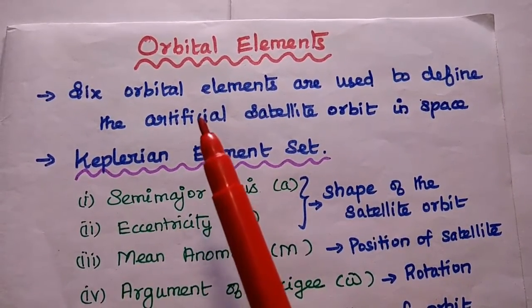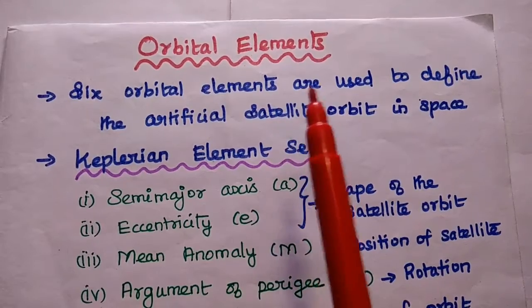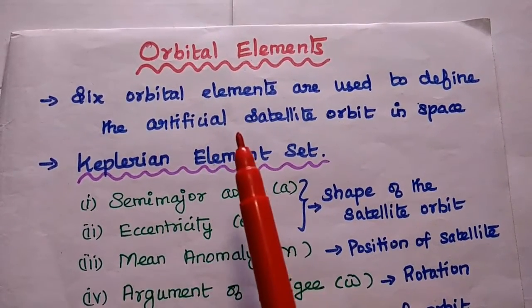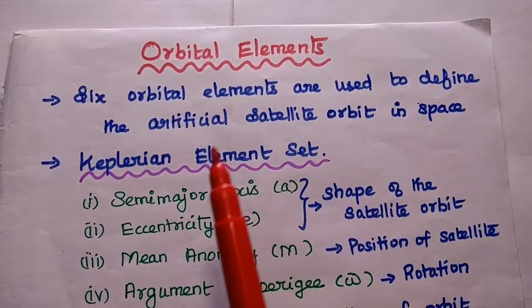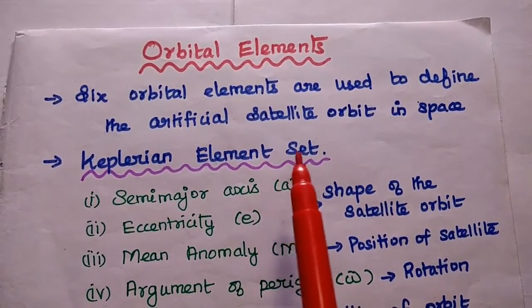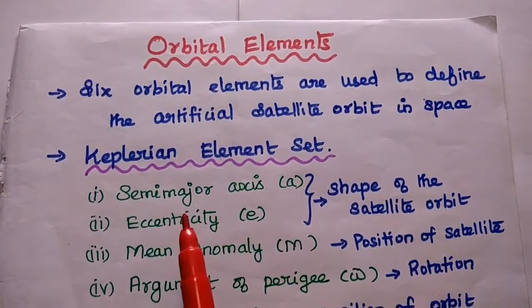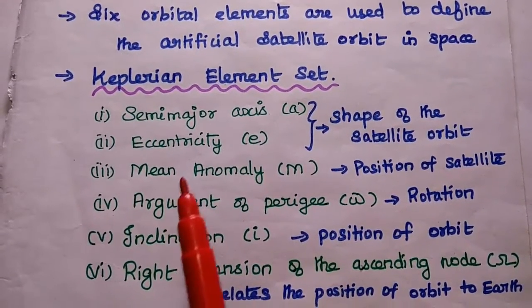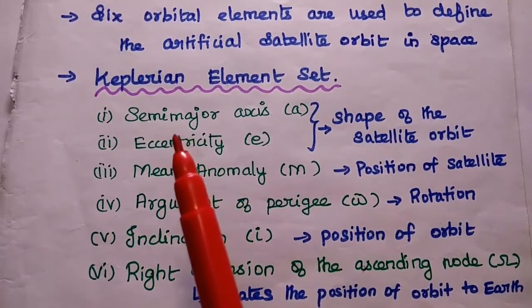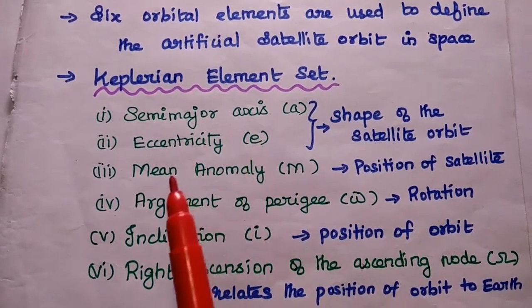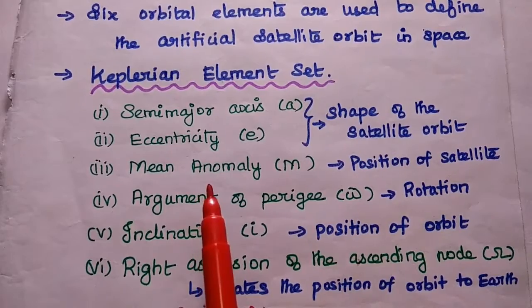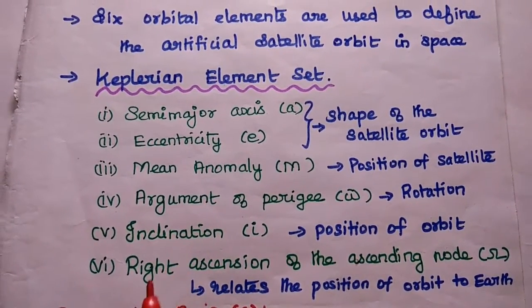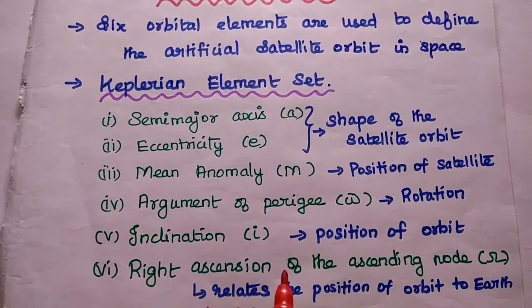We are going to discuss orbital elements in satellite communication. There are six orbital elements used to define the artificial satellite orbit in space. These elements are also called the Keplerian element set. The elements are: semi-major axis, eccentricity, mean anomaly, argument of perigee, inclination, and right ascension of the ascending node.